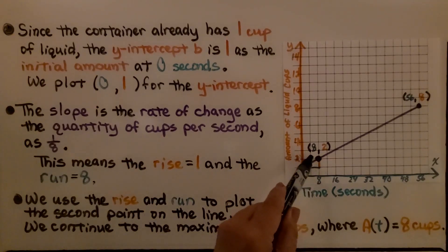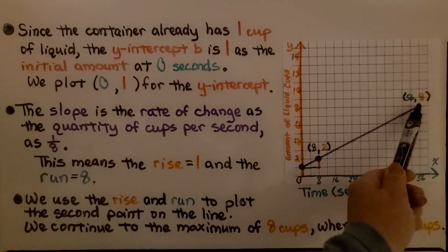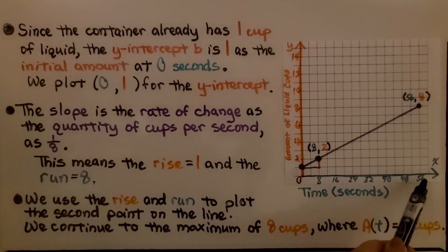So we plot the point at (8, 2). And when we get to 8 cups, which is the maximum for the pitcher, we're at 56 seconds for the x value.